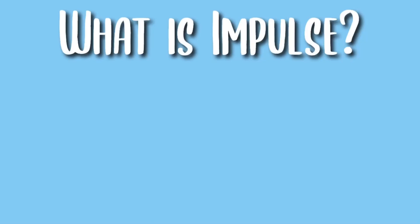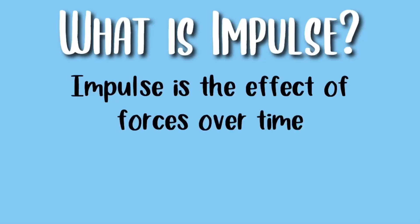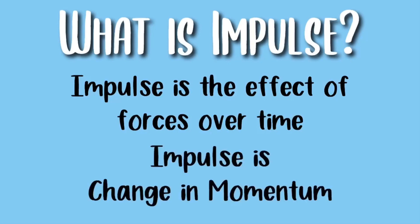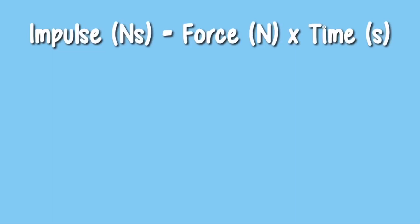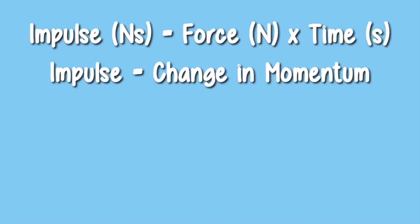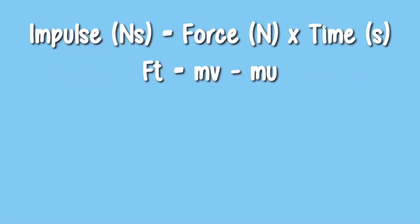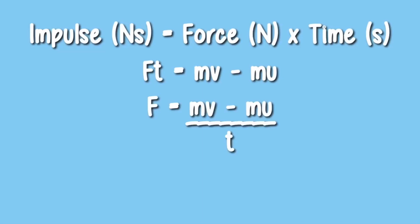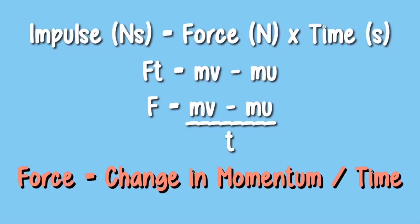Relating to momentum, now we can talk about impulse. What is an impulse? Impulse is the effect of forces over time, and impulse is also the change in momentum. The impulse can be calculated by multiplying the force and time. Since impulse is the change in momentum, we can write the equation where mv is the final momentum and mu is the initial momentum. From this formula we can derive another formula to find force — in conclusion, force equals the change in momentum over time.